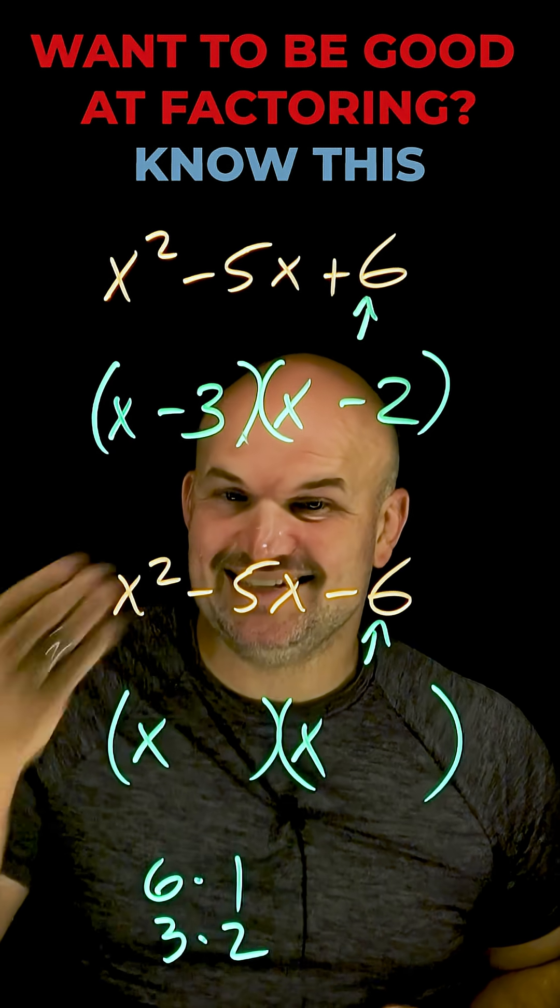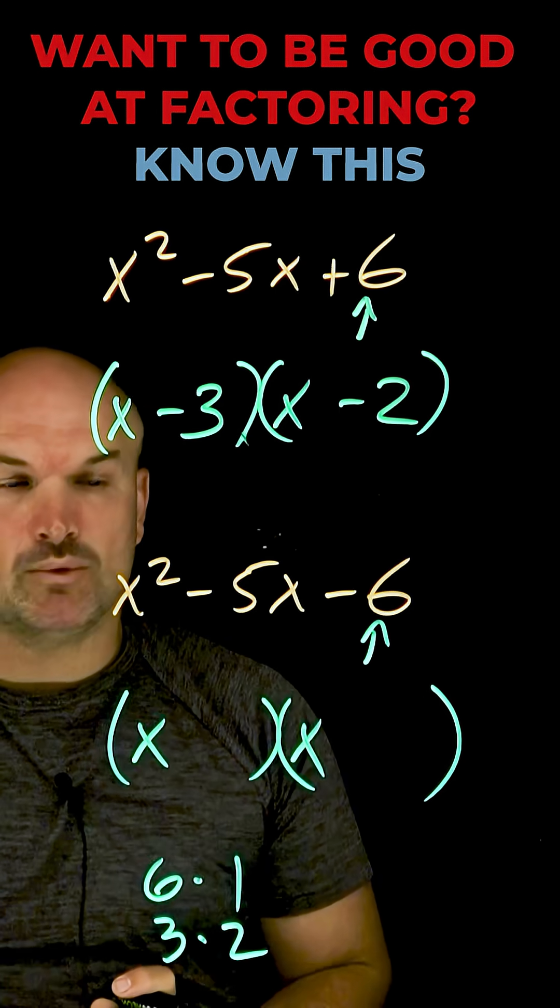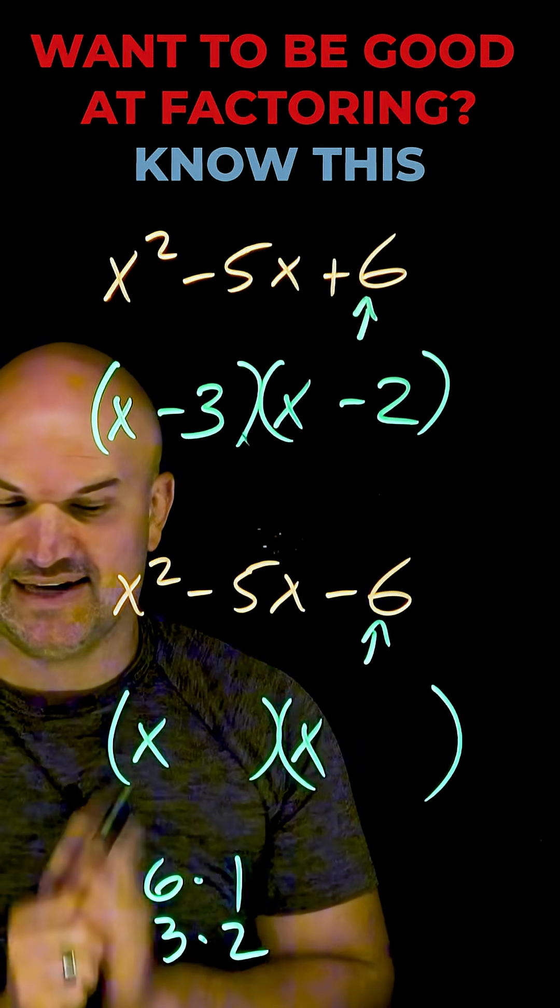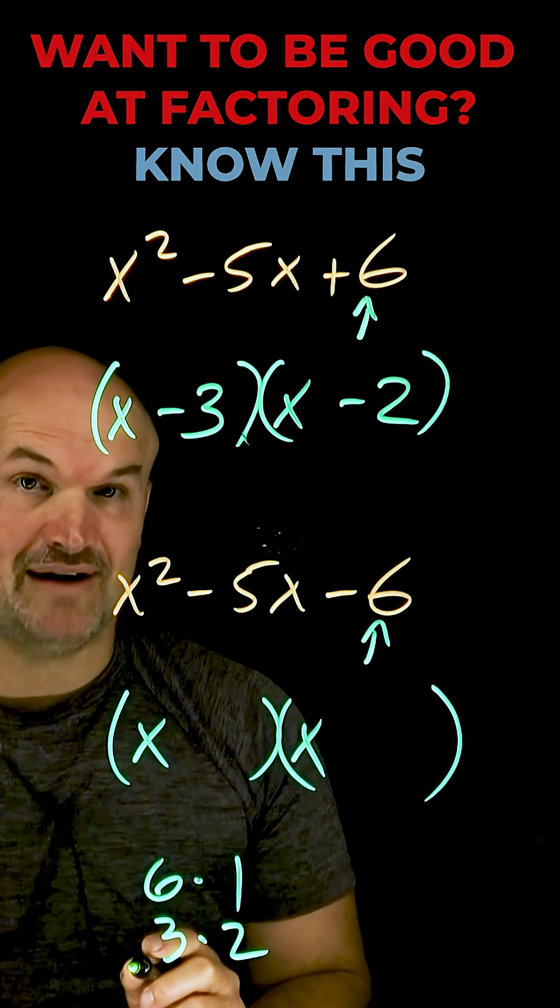It's negative six. We're thinking difference. So now when we look at our factors, six and one and three and two, we're looking for what factors have a difference of five. Again, forget about the negative for just a second. As you can see, three and two have a difference of one. Six and one, though, have a difference of five.